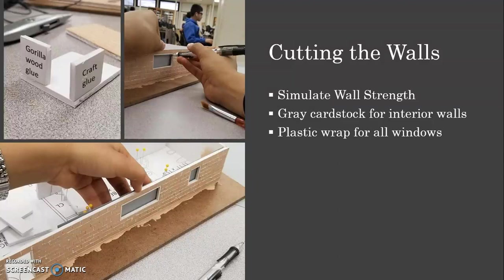To make the window openings, I traced the opening with a pencil onto the interior cardstock and the opening was then precisely cut out using a utility knife. One of the mistakes I made was gluing down the cardstock before realizing I had wanted to use plastic wrap on the interior of the windows to make it appear more realistic. So I had to measure and cut out the cardstock again, then attach the plastic wrap to the side of the cardstock that would be glued to the wall, and then glued these onto the interior of the exterior brick walls.